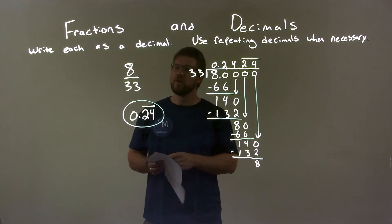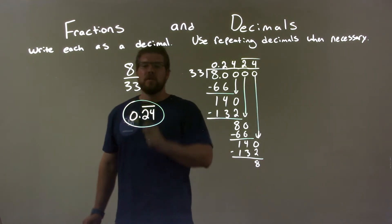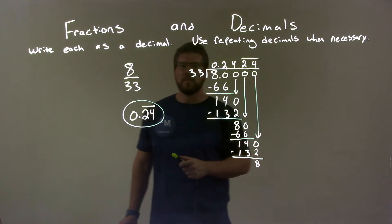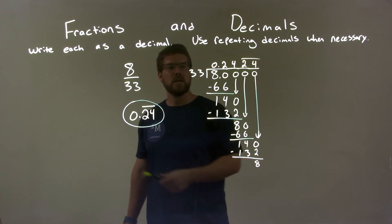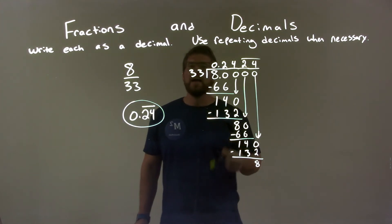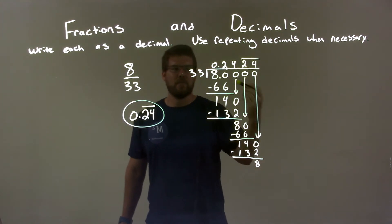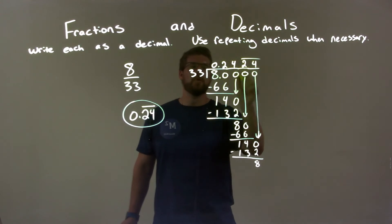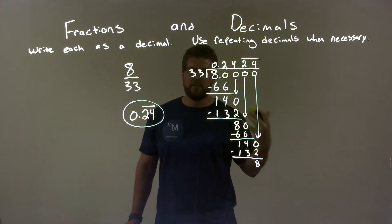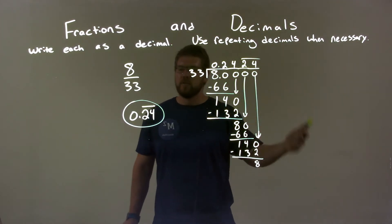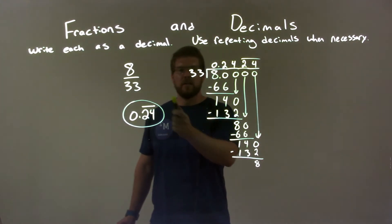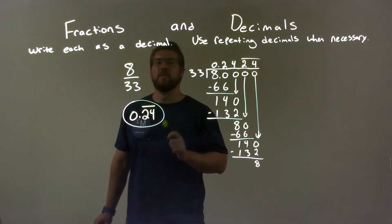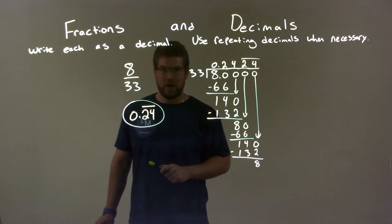Quick recap. We have 8 over 33, and we have to write that as a decimal. I used long division — 33 into 8 — and I noticed we had a repetition of 0.24. The two-four is repeating forever. So our final answer is 0.24, the two-four repeating forever.